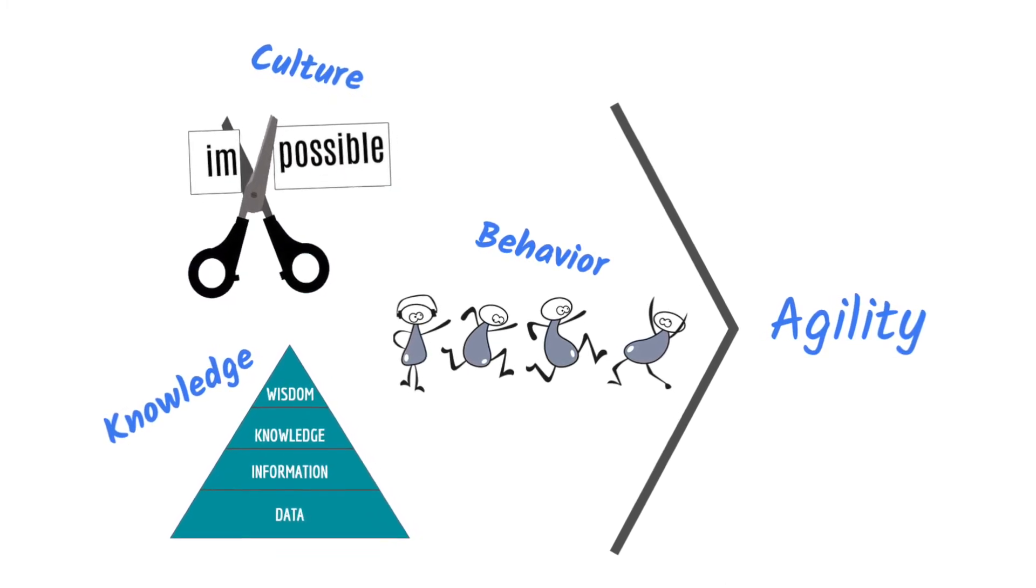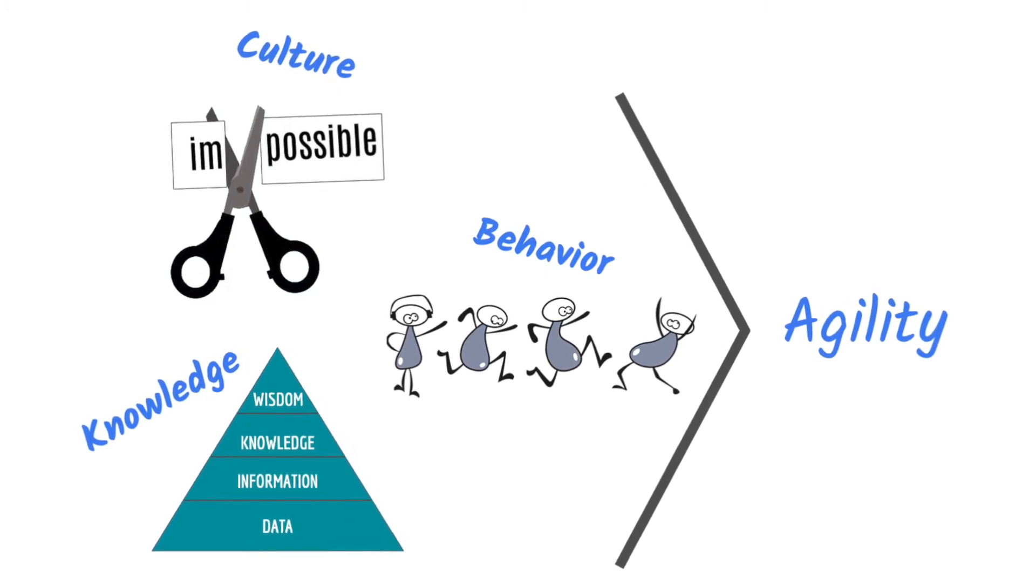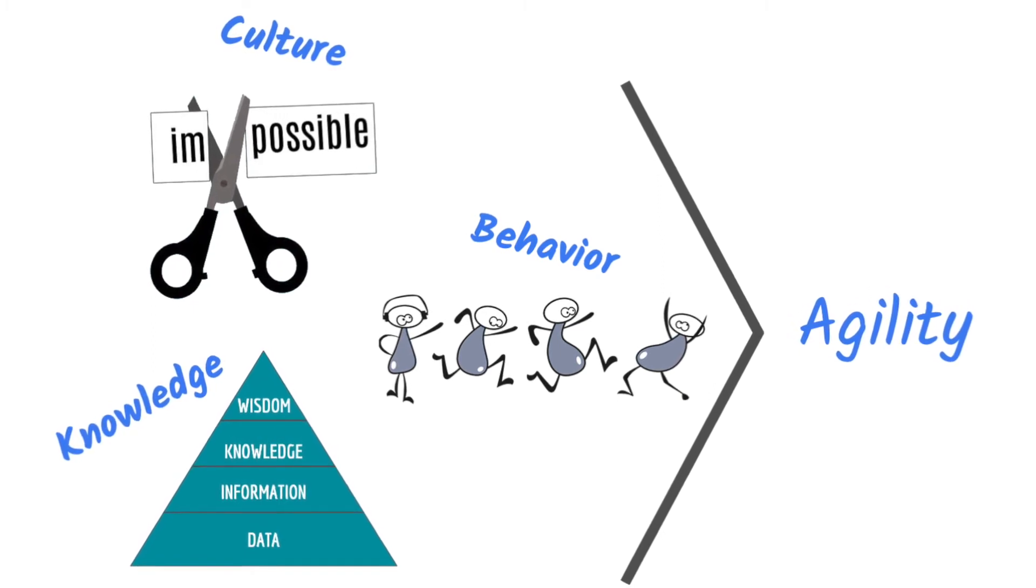Because nowadays, the flow is often disrupted by cross-cutting issues, and those issues need to get resolved right away to restore the flow. That's why agility depends on behaviors and culture.